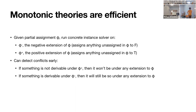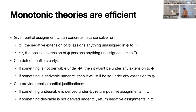The monotonicity happens on the theory side. When you get a partial assignment, we can use it to proactively provide precise conflict justifications. If there's something undesirable that you derive under the negative extension, you can return the positive assignments in phi as a conflict justification. And analogously for the positive extension. This monotonic theory paper came out in 2015.